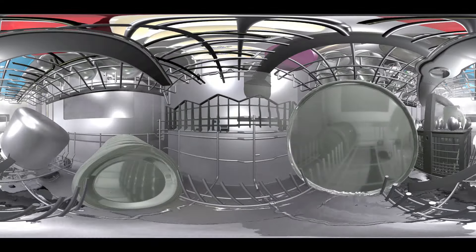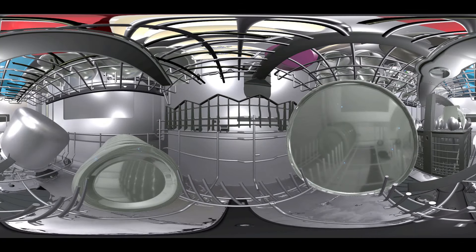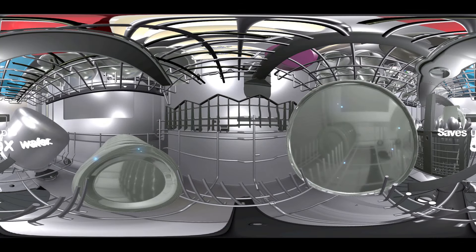To top it all off, the Bosch dishwasher does all this while using only 10 litres of water, saving you up to 5 times as much water.